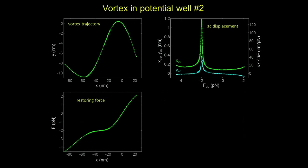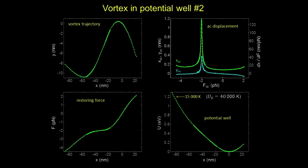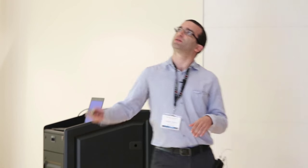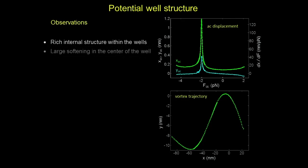To show what else we can do with this data: we can plot position versus force, and finally plot the potential energy versus force to get a relative energy scale for this well. We were very surprised to find it's about 1.2 eV — this well is extremely deep, about one-tenth of the whole condensation energy of the vortex. To summarize the observations: we find rich internal structure within the well, large softening in the center, and what we call the 'broken spring effect' — like pulling on a spring and it suddenly breaks.